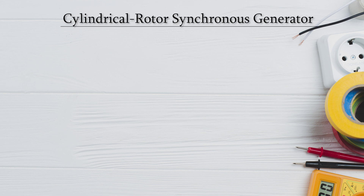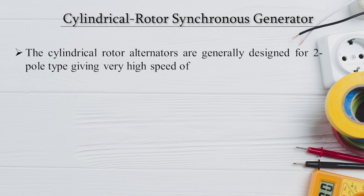Cylindrical rotor synchronous generators are normally designed as two-pole machines. Since synchronous speed NS = 120F/P, and normal power frequency is 50 Hz, with number of poles equal to 2, we get 120 × 50 / 2 = 3000 RPM — a very high speed requiring a cylindrical rotor synchronous generator.